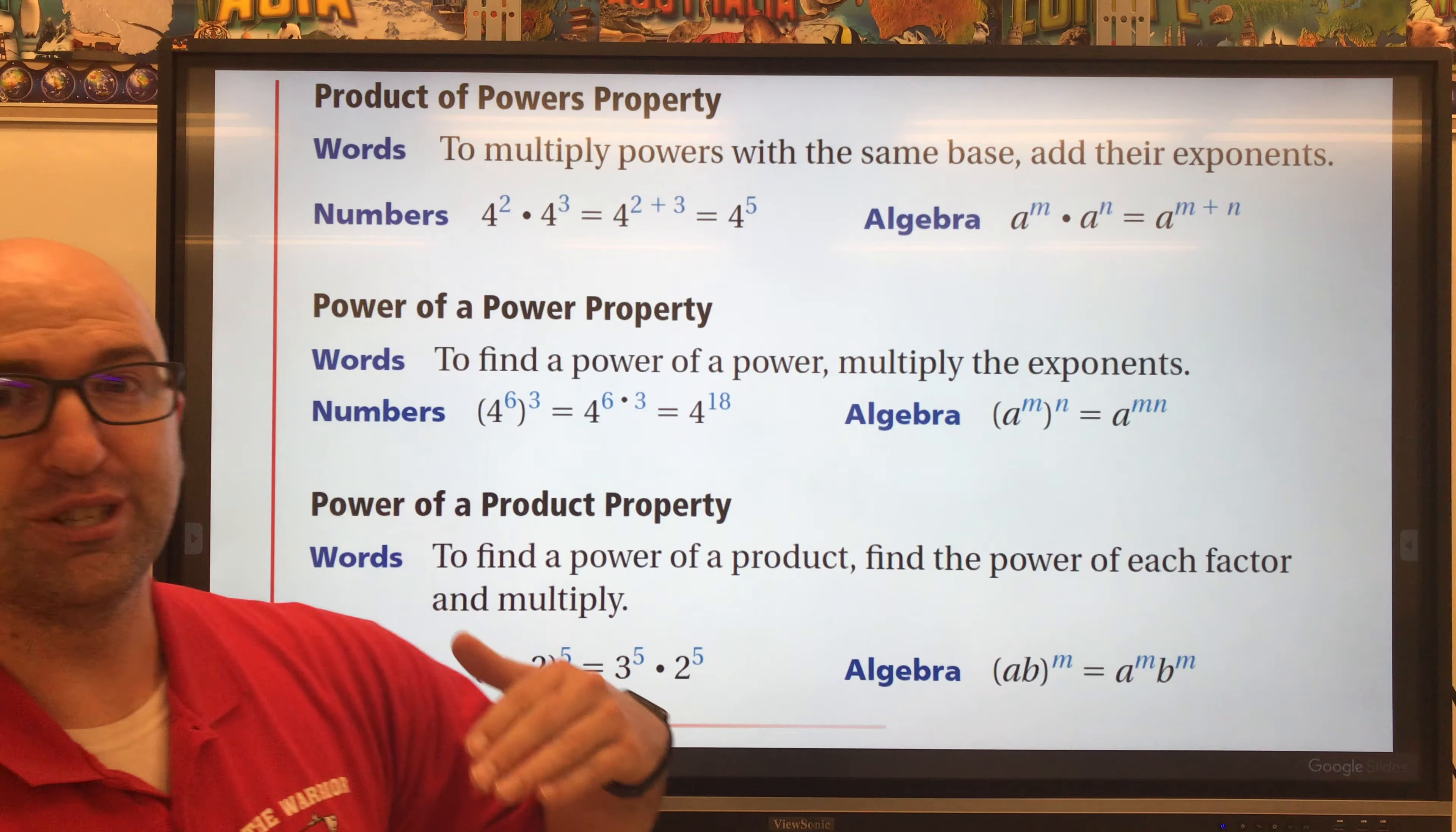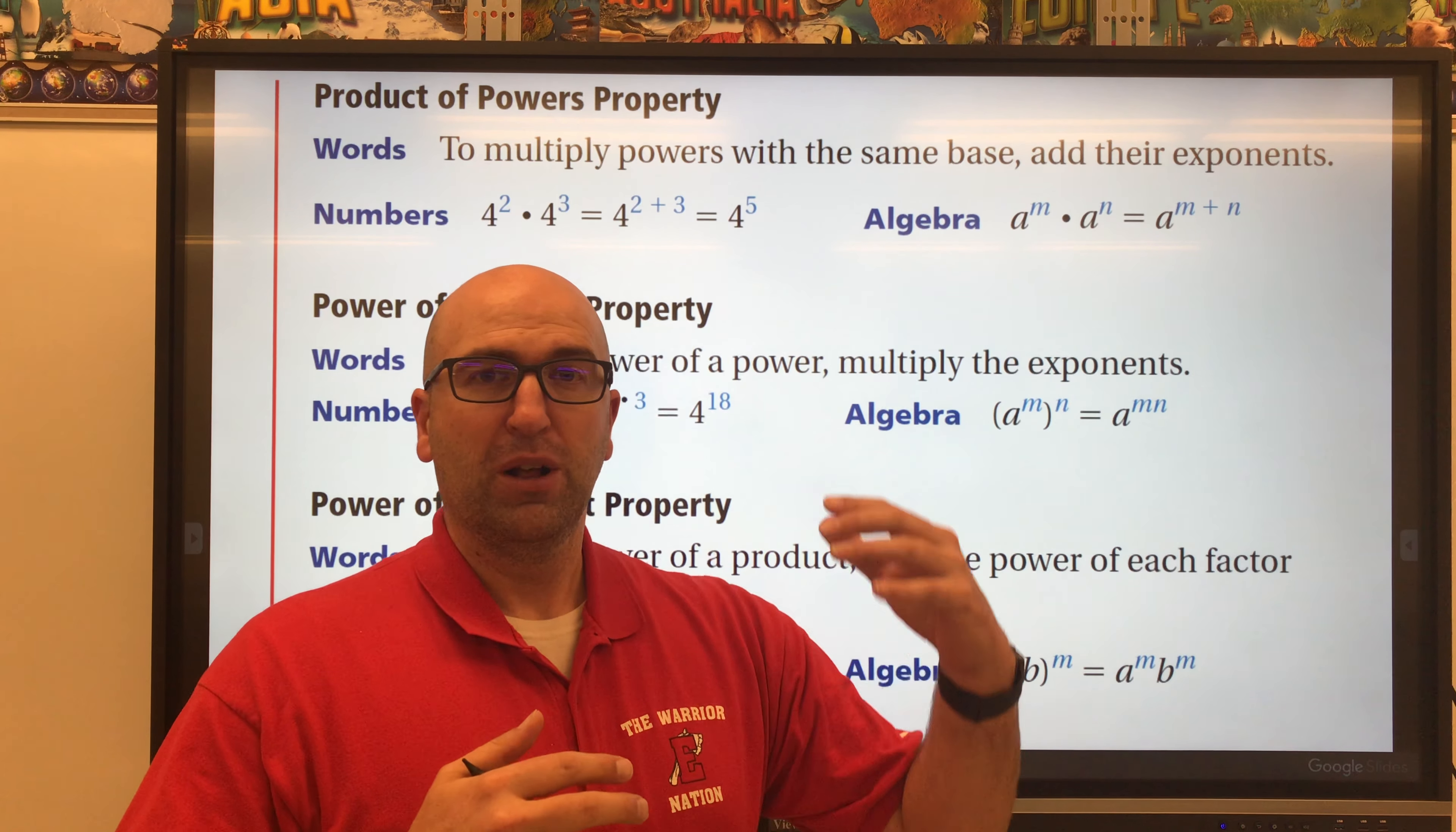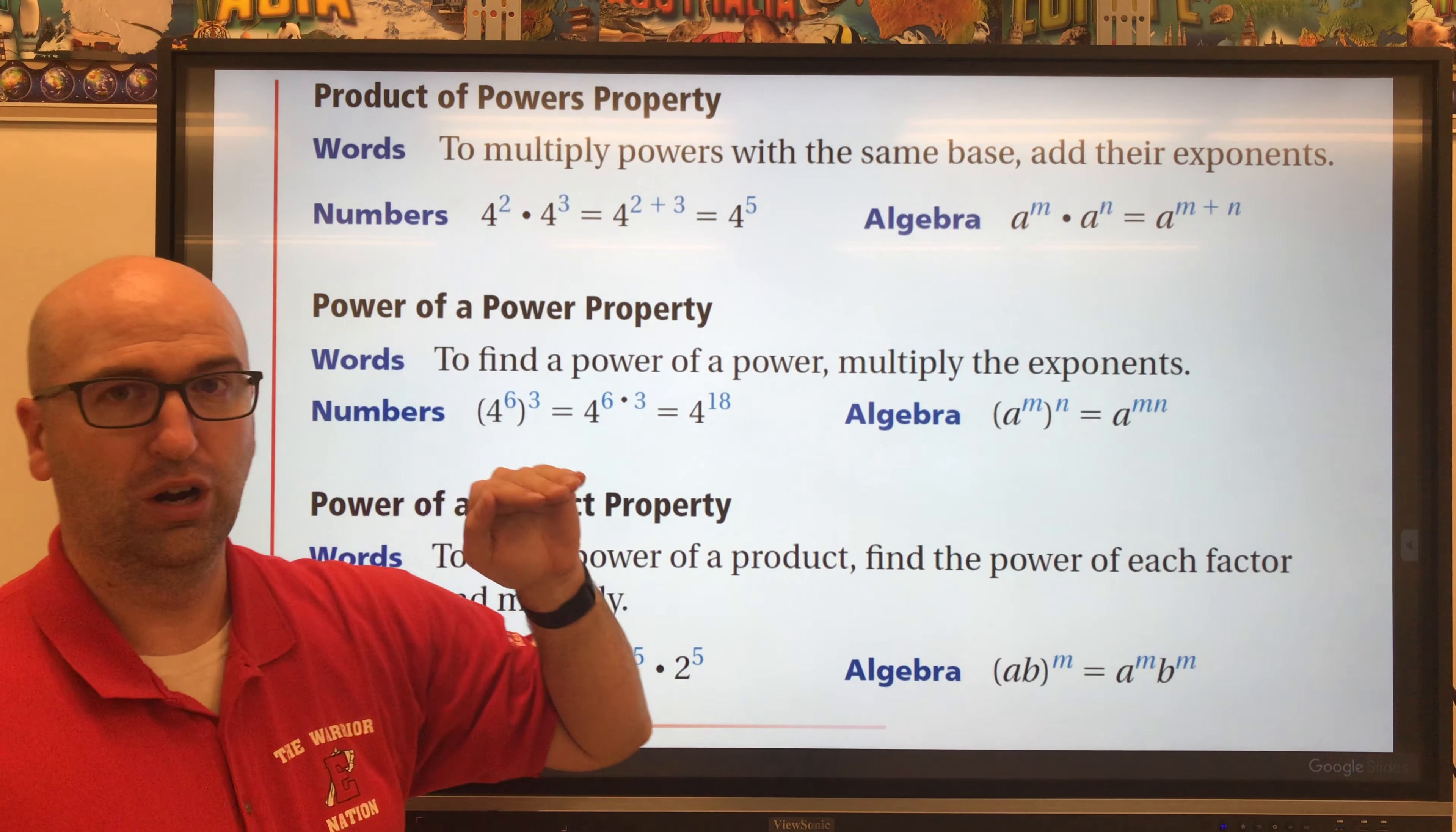When multiplying exponents, there are different rules depending on what the problem looks like. This page has three examples on it. We're only going to go through the first two examples and focus on these two up here: Product of Powers Property and Power of a Power Property.